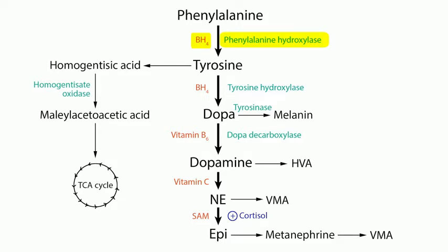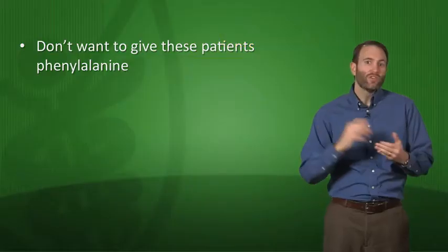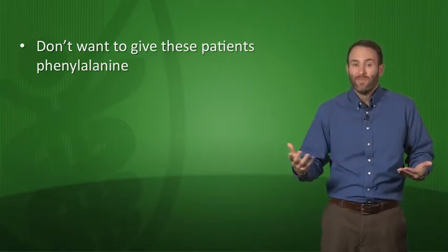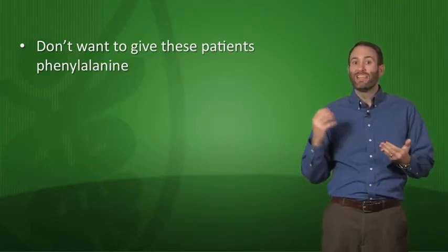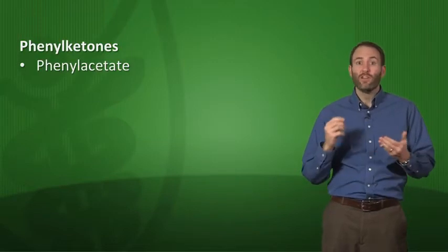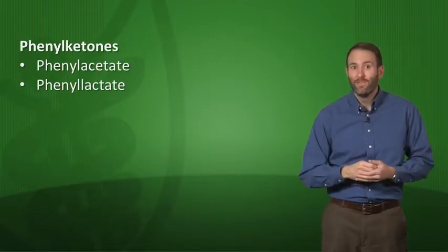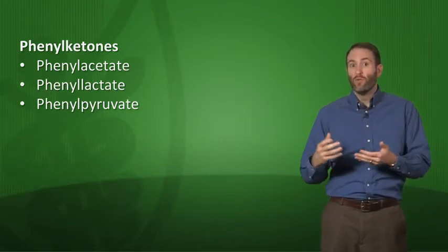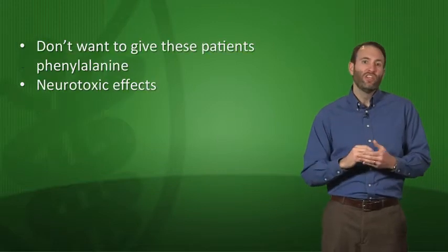Just like with any metabolic disorder, if you're deficient in this enzyme you can't produce the downstream product, so tyrosine becomes an essential amino acid for these patients. You also don't want to give these patients a lot of phenylalanine because it will just build up and can't be processed, resulting in phenylketones — which include phenylacetate, phenyllactate, and phenylpyruvate.